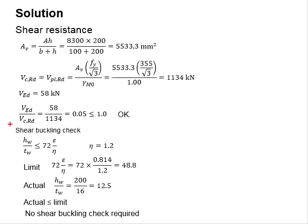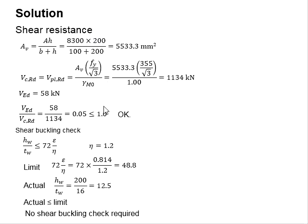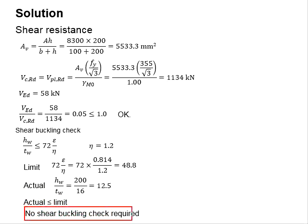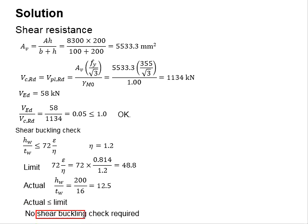Next, check for shear buckling. The requirement is given, and eta referring to Eurocode 3 is equal to 1.2 for steel grade less than 460. The limiting value is found to be 48.8, and the actual hw/tw ratio is equal to 12.5. Since the actual ratio is less than the limiting ratio, shear buckling check is not required, shear buckling does not occur, and it does not reduce the shear resistance of the member.